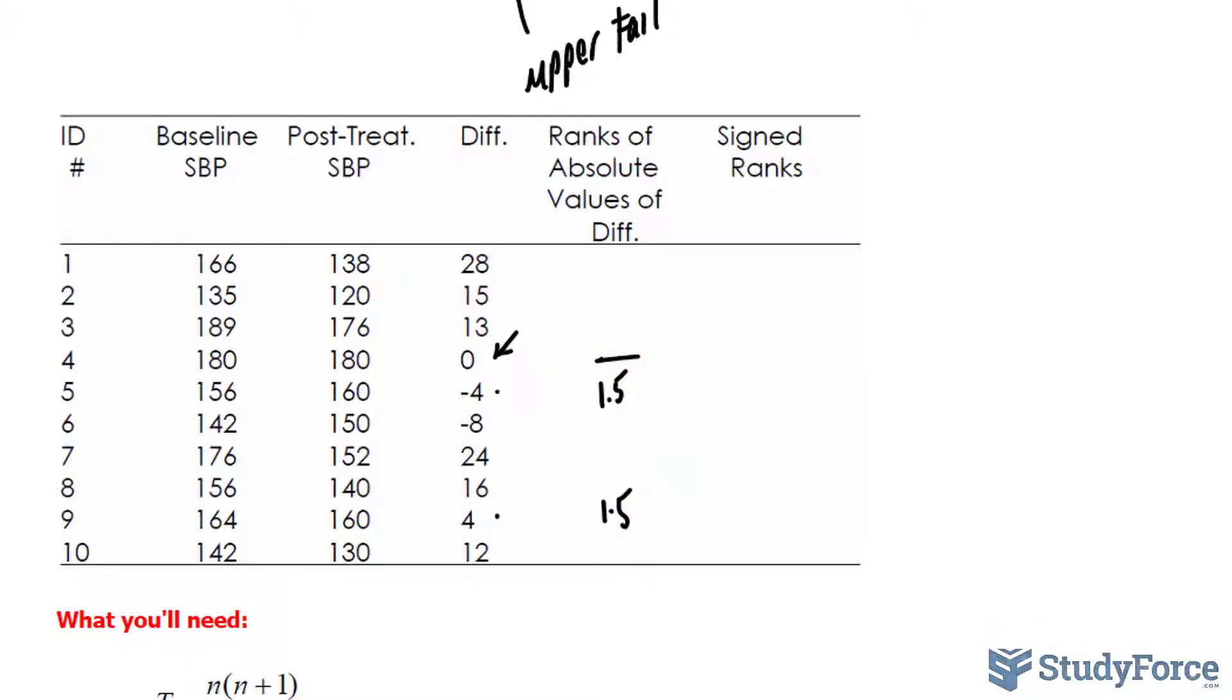Now the third largest in magnitude difference is negative eight. Then comes 12. 13 is in fifth place. Sixth is for 15. Seven, eight, and a ninth place is 28.